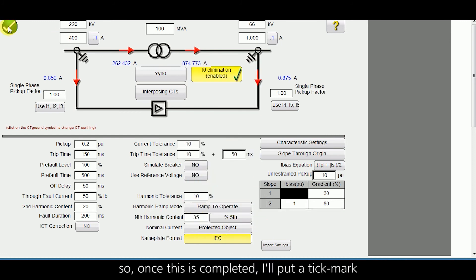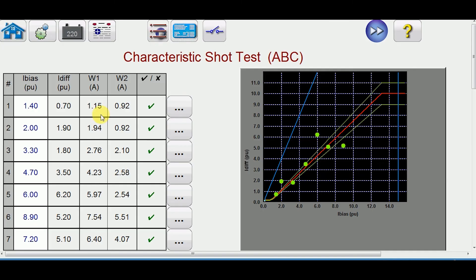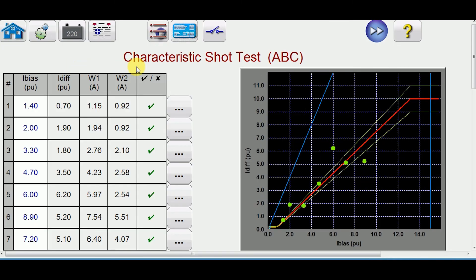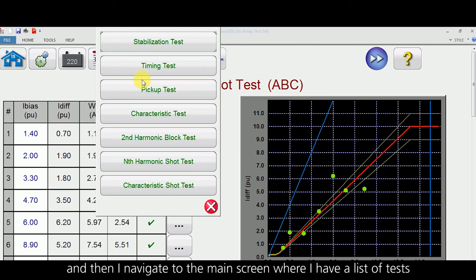So once this is completed I put a tick mark and then I navigate to the main screen where I have a list of tests like stabilization test, timing, pickup, characteristics, second harmonic block, nth harmonic, and characteristics shot test. So let us see one by one.